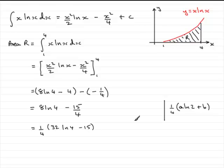But we still haven't got a natural log of 2. So what we can do is think of this as 2 squared, for instance. So if we do that, we've got equals a quarter multiplied by 32 and the natural log of 2 squared minus 15.